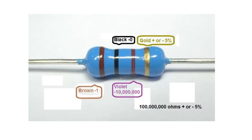Here is a picture of an actual resistor. From its colored bands, we can determine that it has a resistor value of 100,000,000 ohms plus or minus 5%.